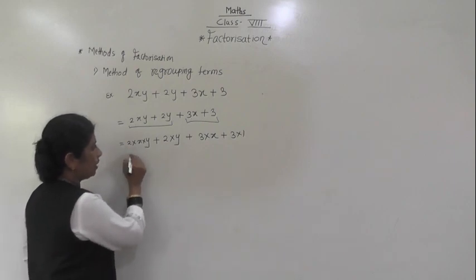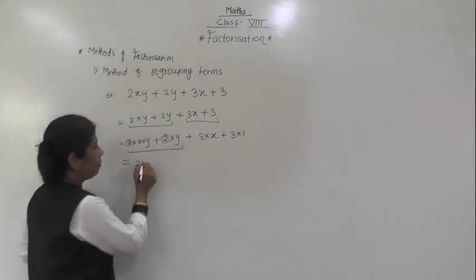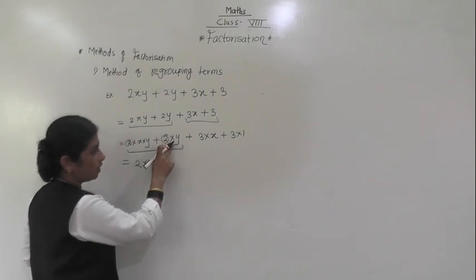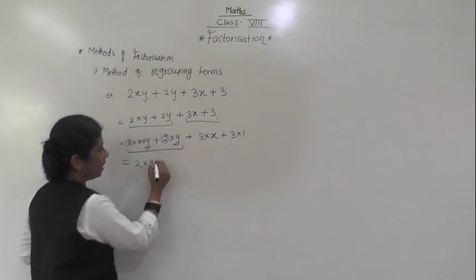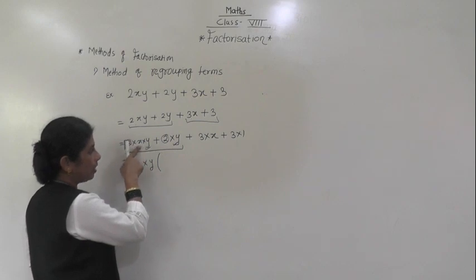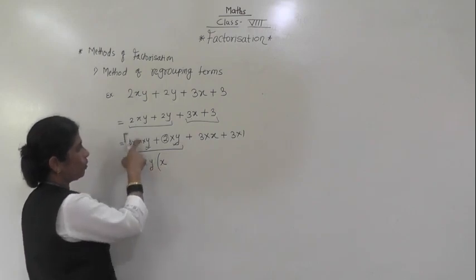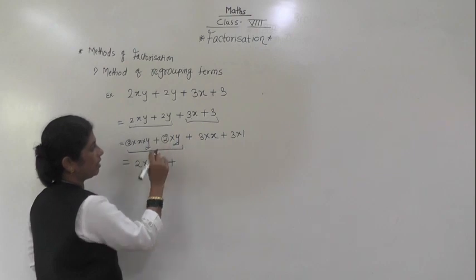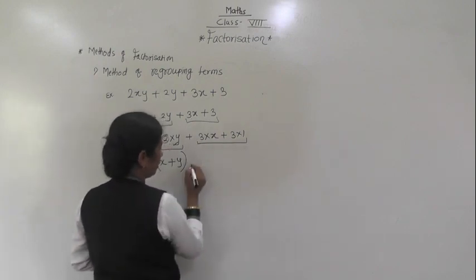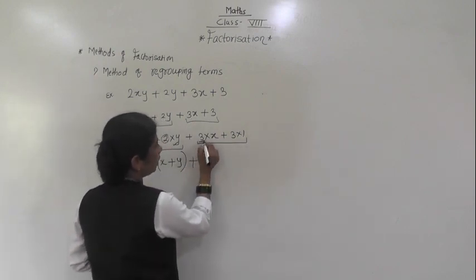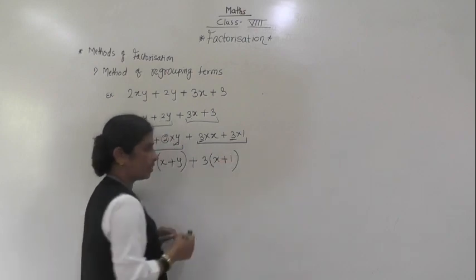What is common in the first group (2xy + 2y)? 2 is common, and y is also common. So I take 2y outside. What remains inside: x from the first term, plus 1 from the second term (since 2y is already outside). So the first group gives 2y(x + 1). Then the second group (3x + 3): 3 is common. So 3(x + 1).